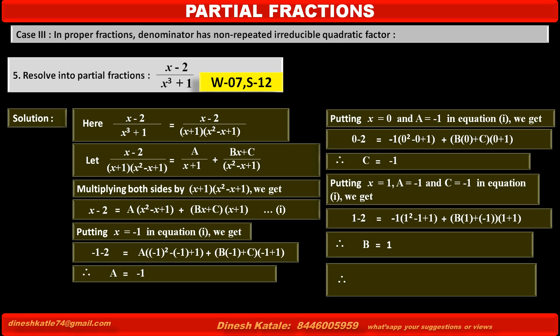Therefore, the given fraction (x minus 2) upon (x plus 1)(x squared minus x plus 1) equals, replacing A by minus 1, minus 1 upon (x plus 1), plus, replacing B by 1 and C by minus 1, (x minus 1) upon (x squared minus x plus 1).